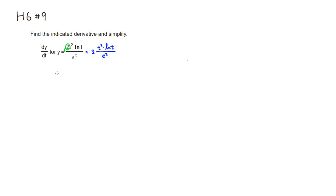Let's find the derivative. We take the derivative of y with respect to t. Since 2 is just a constant multiple, put it in front. Square the bottom, so you have e to the t squared. The derivative of t squared would be 2t, times the second factor, natural log of t.